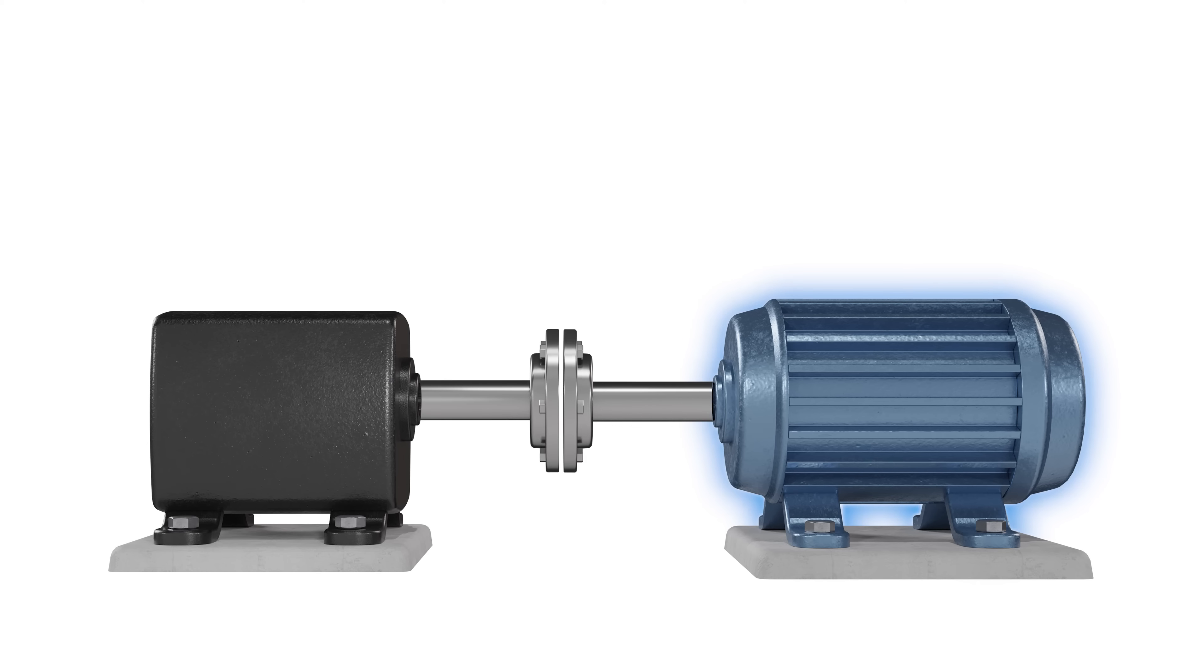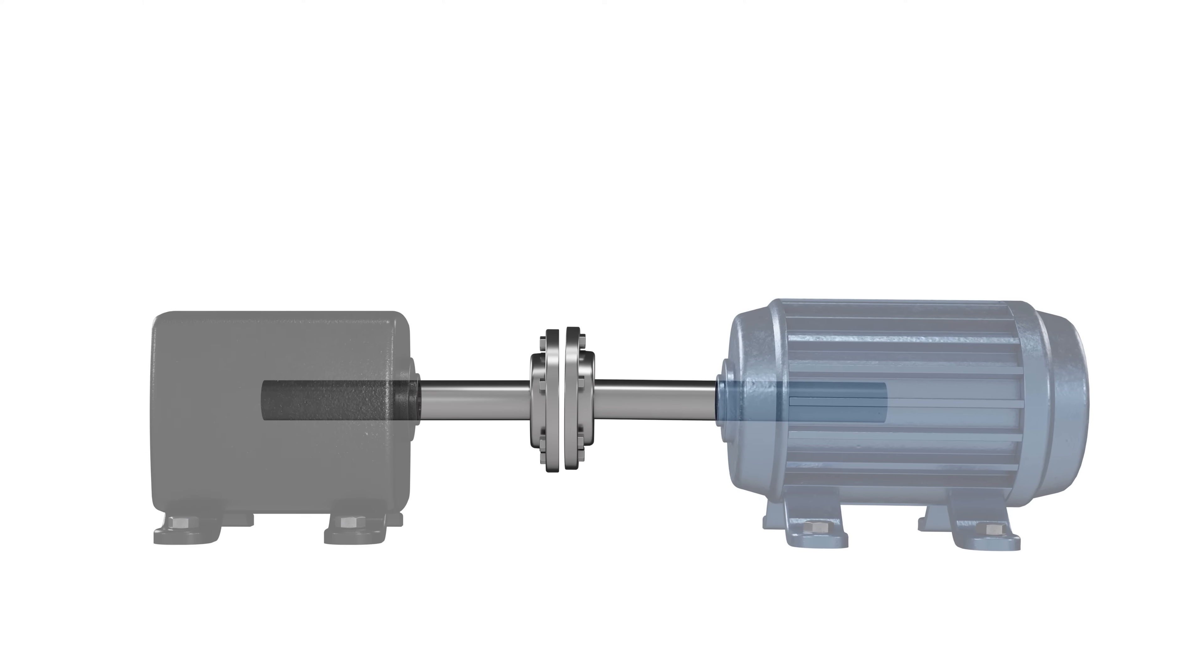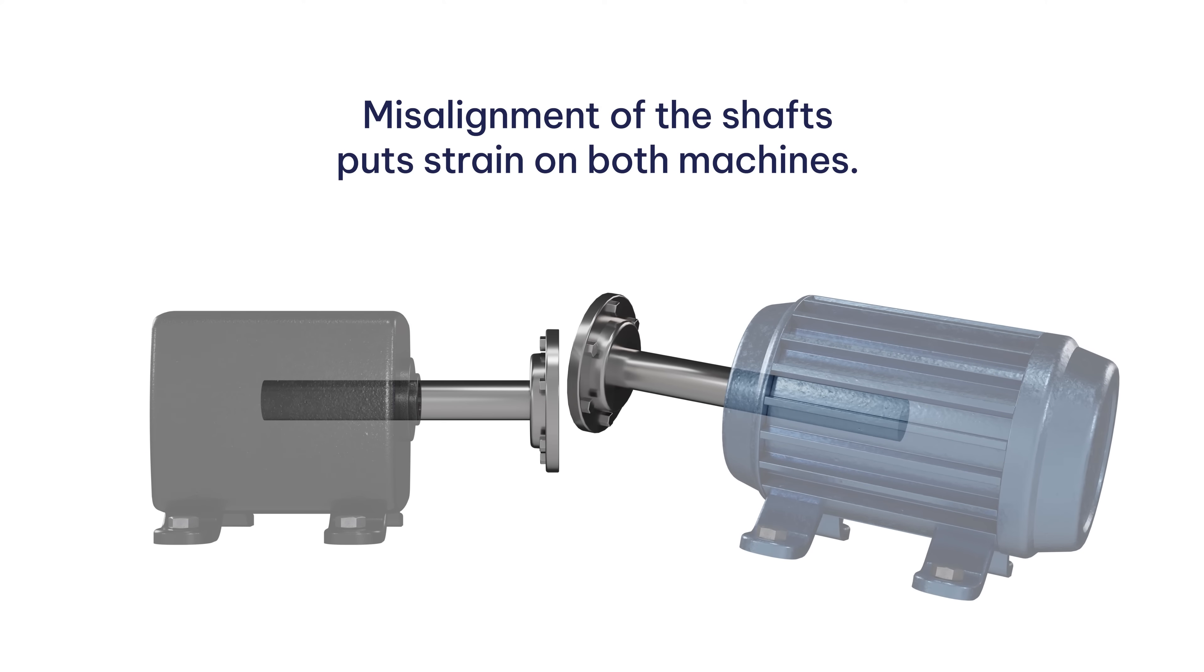The shaft in the motor or engine rotates and drives the shaft in the pump or other driven machine. Misalignment of the shafts puts strain on both the motor and the pump. It can damage the bearings, couplings, and other machine components.